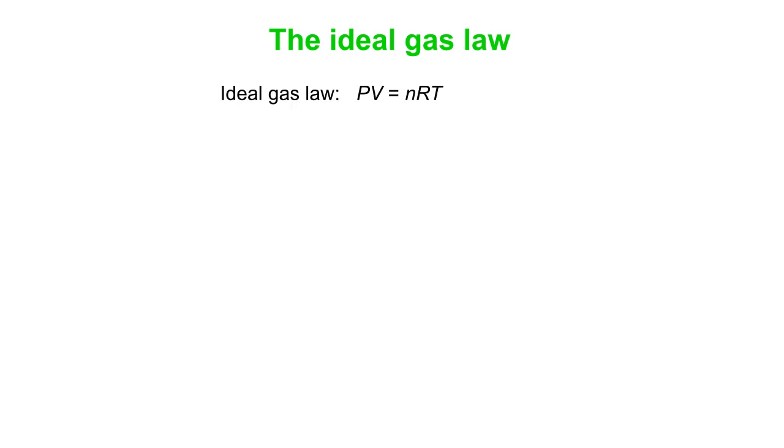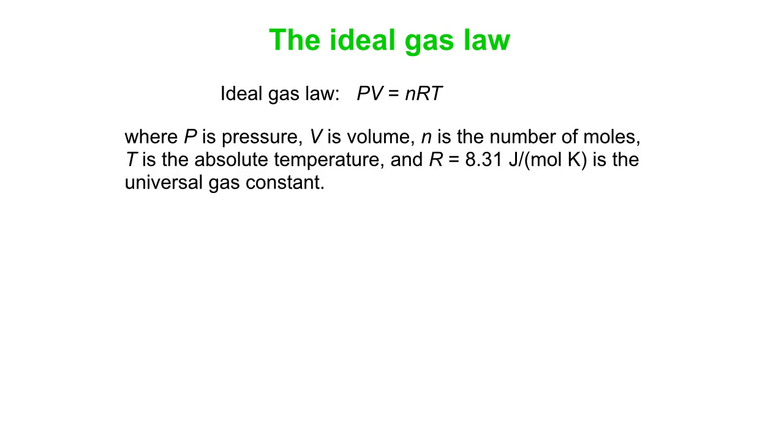Okay, so then we write this down. PV equals NRT. That's the ideal gas law. What do all those things stand for? So, P is the pressure. V is the volume.